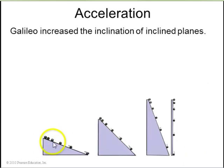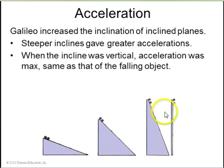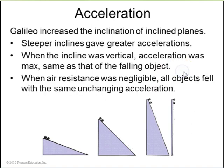When Galileo increased the inclination of his planes, he found that the balls rolled down with greater accelerations. And when he got to a vertical incline, he got to some maximum acceleration, which is the same as if you just drop it with no incline at all. So when air resistance is negligible, all objects fell with the same unchanging acceleration. And that was called free fall.